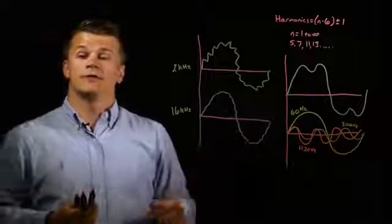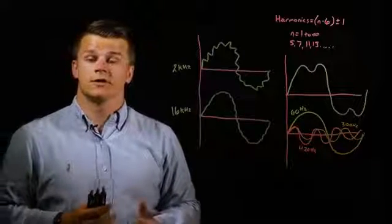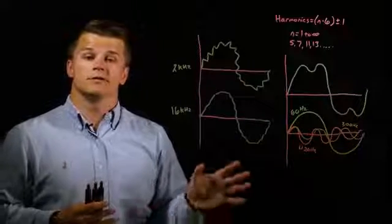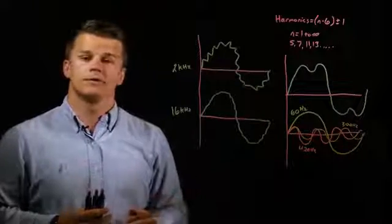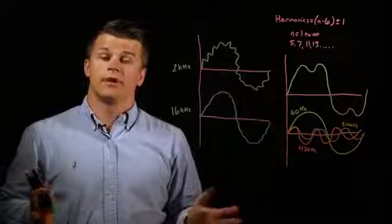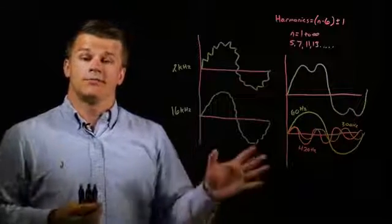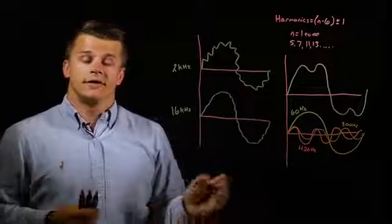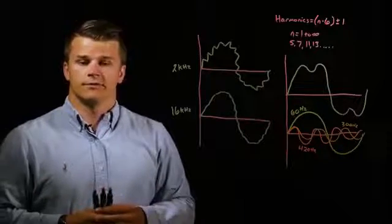And then this effect is more pronounced as the output frequency to the motor increases. So typically at KEB, we recommend your switching frequency is at least 10 times that of your output frequency. So for example, if you have a 400 hertz output, you'd want to have at least 4 kilohertz on your switching frequency. And if you have an 800 hertz output, you'd want to have at least 8 kilohertz on your switching frequency.